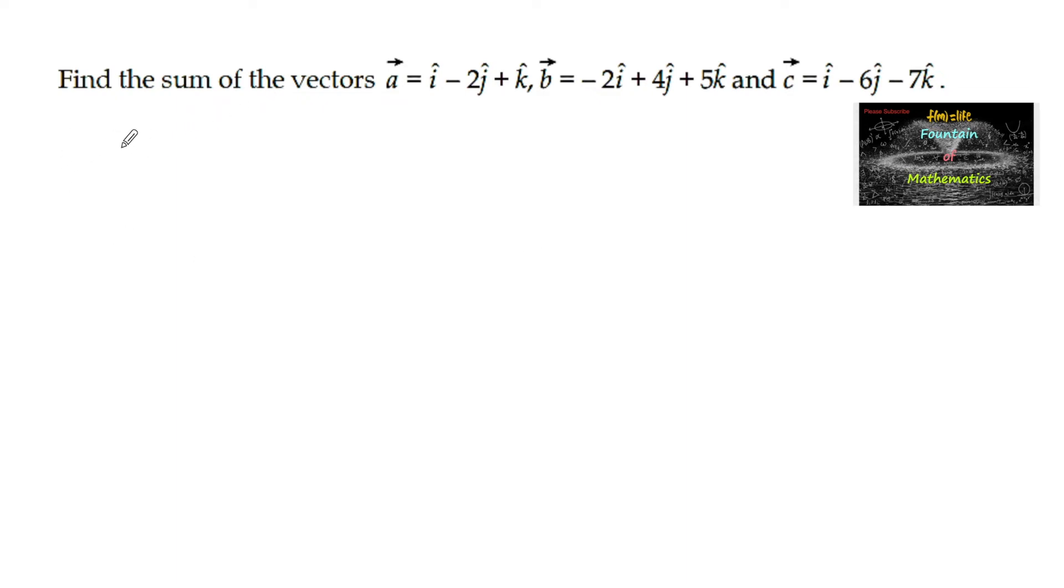Find the sum of the vectors a is equal to i minus 2j plus k and vector b is equal to minus 2i plus 4j plus 5k and vector c is equal to i minus 6j minus 7k.